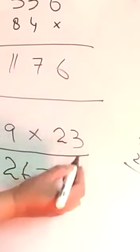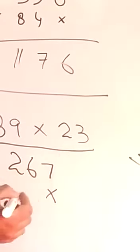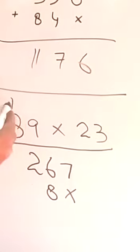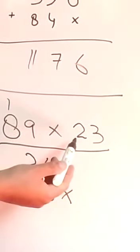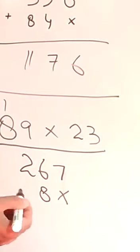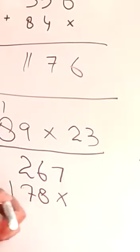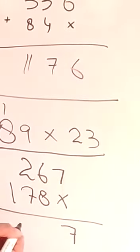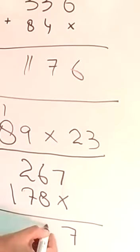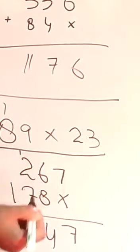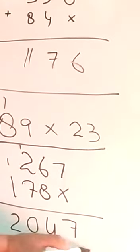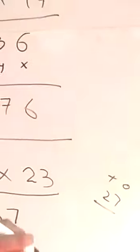Ab yahan par doosra digit humare paas hai 2. 2×9 is 18 — yahan par 8 aayega, 1 carry. 2nd position par, tens position par. 2×8 is 16, plus 1 carry — ho gaya 17. Ab isko add karenge: 7, 6 plus 8 is 14 — 4 lagega, 1 carry. 2 plus 1 is 3, 3 plus 7 is 10, 1 carry. Answer: 2047.